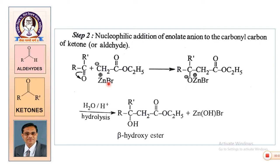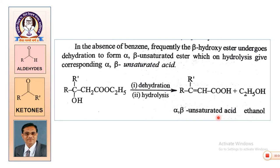We get a ZnBr group attached to the oxygen and the carbonyl carbon, while the CH₂⁻ gets attached to the electropositive carbonyl carbon. This gives an intermediate compound with an O–ZnBr group and the R and R' substituents. This intermediate on hydrolysis gives the beta-hydroxy ester, with ZnBr–OH as a byproduct.